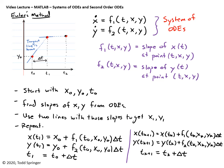That's Euler's method for a system of ODEs — very intuitive. You just do the same thing twice using two different slopes. I would like to do an example, but I'm going to save it for the second-order ODE section. So we'll come back to this a little bit later.